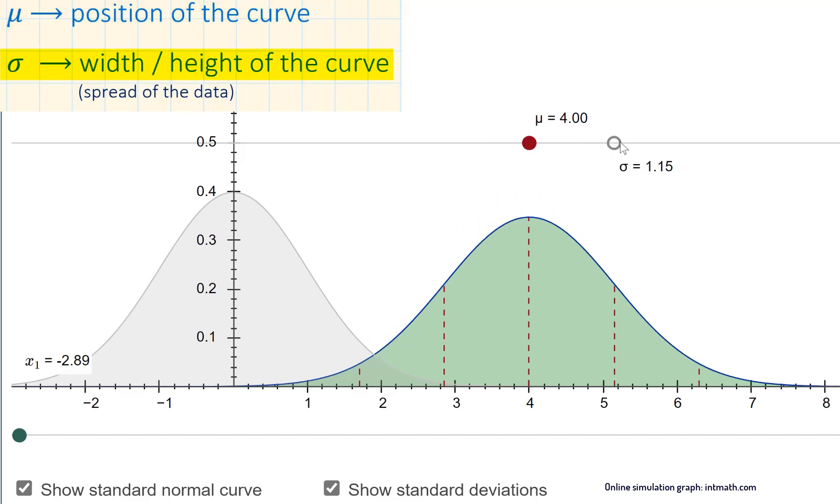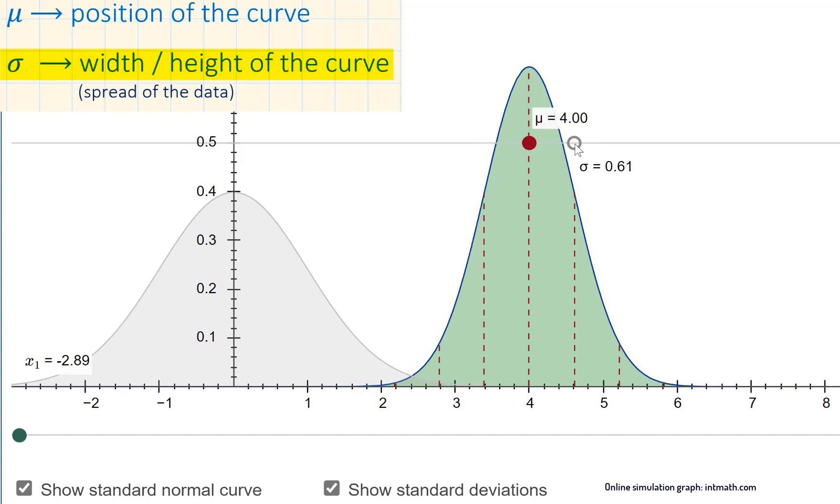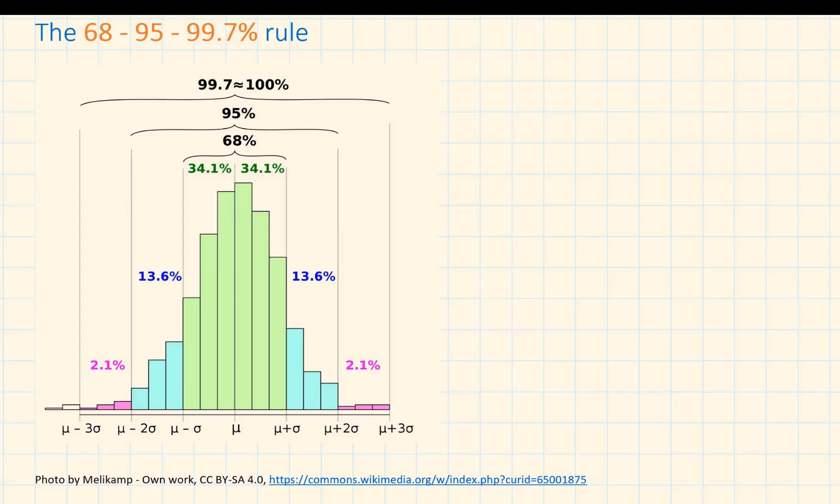The standard deviation determines the spread of the data. The larger the standard deviation, the wider the curve. The smaller the standard deviation, the narrower and taller the curve. Regardless of the shape of the curve, the area under the curve is always equal to 1 or 100% because it represents a total probability.